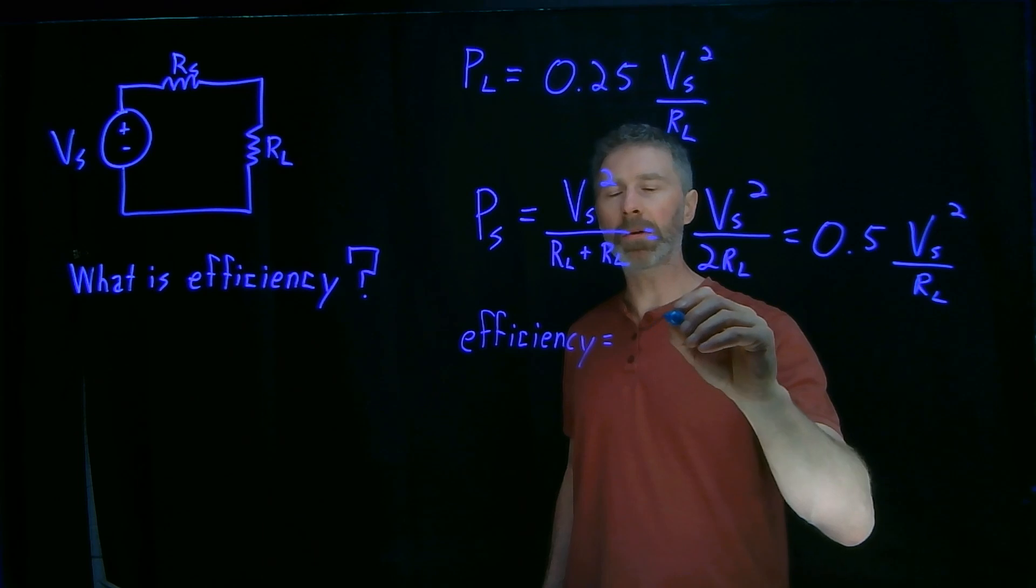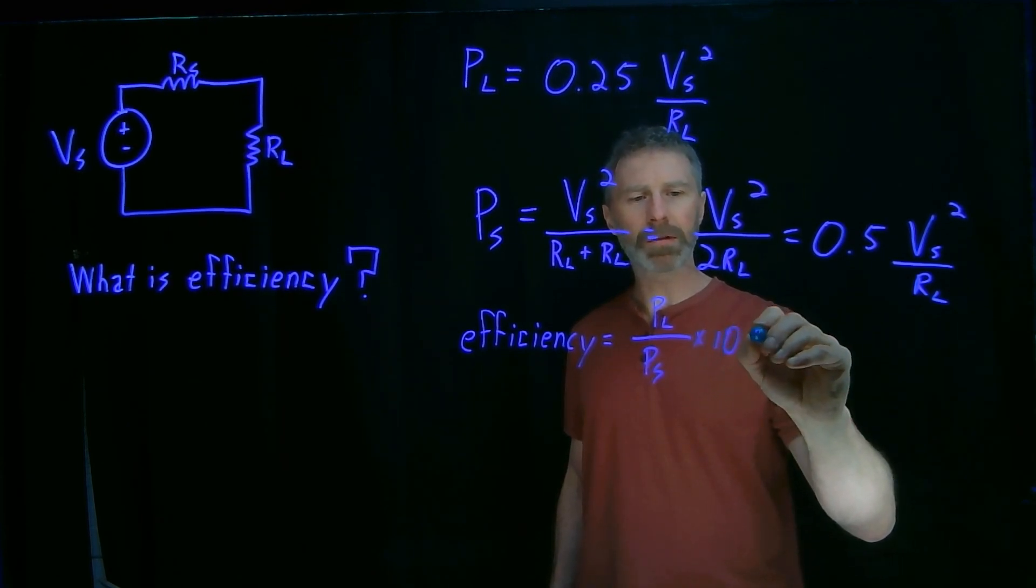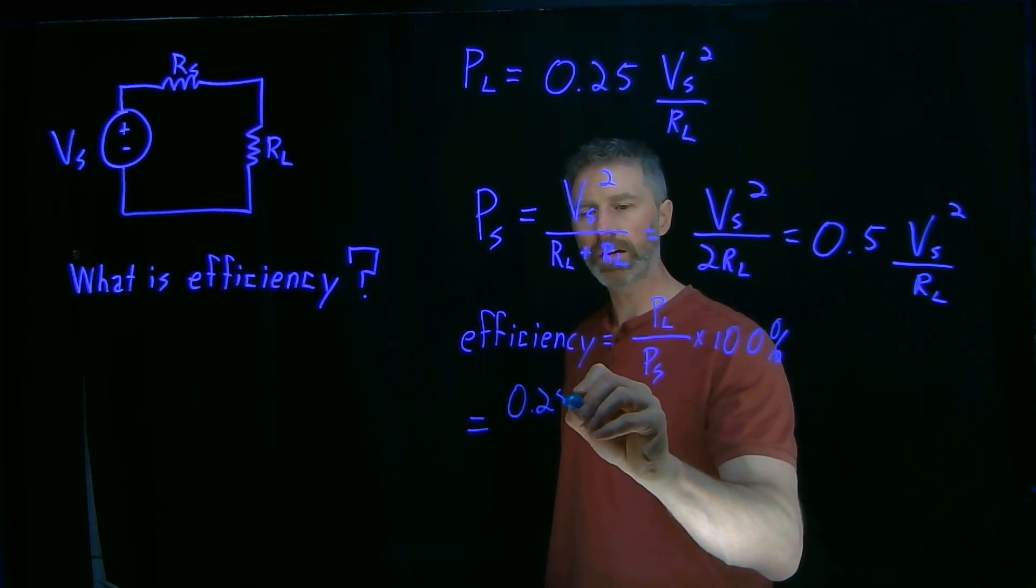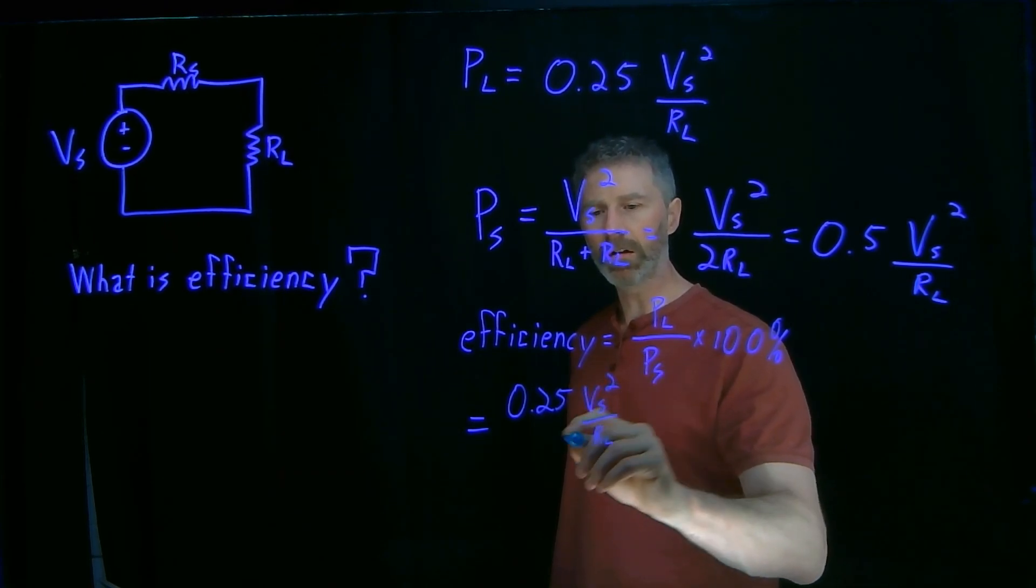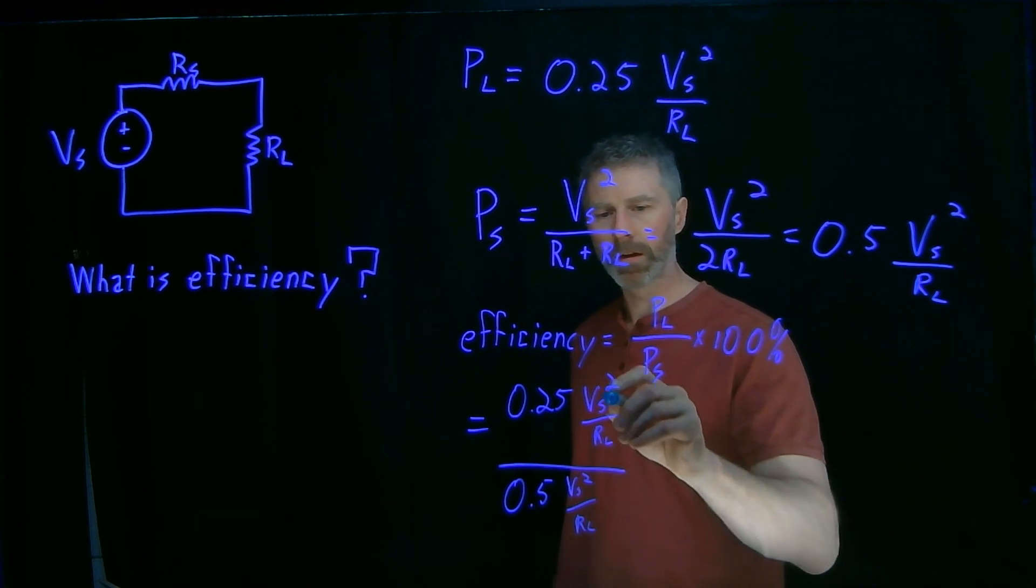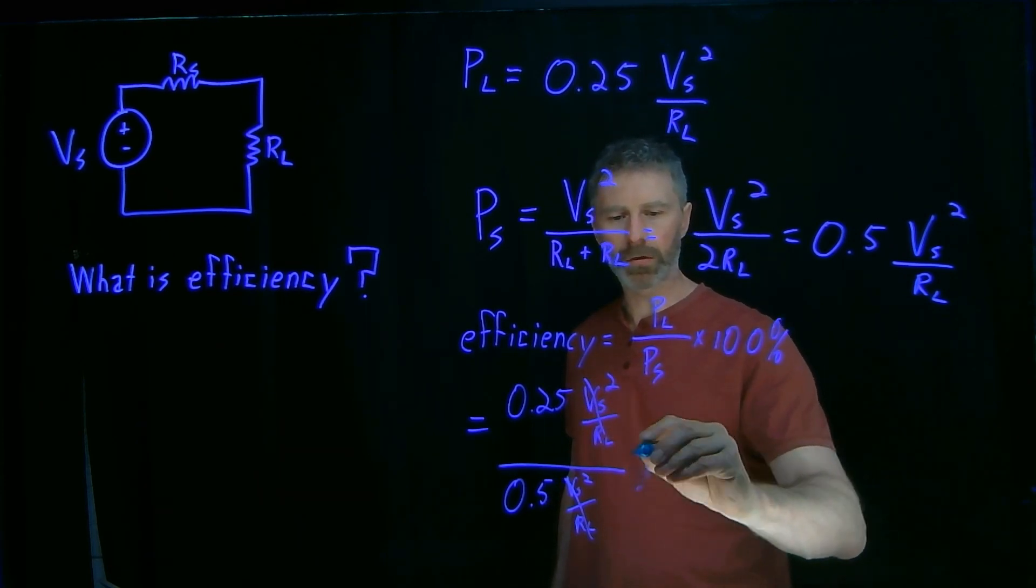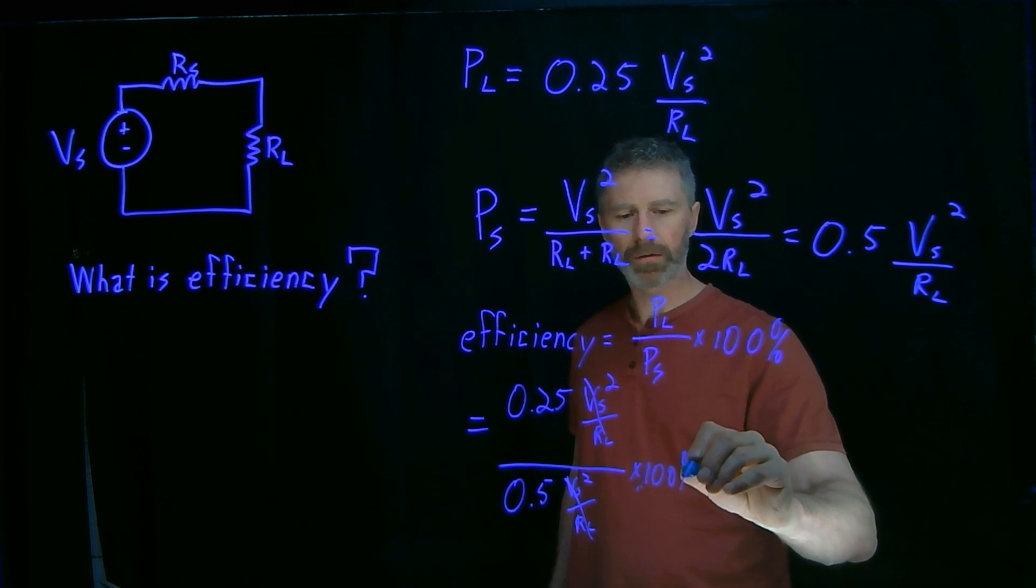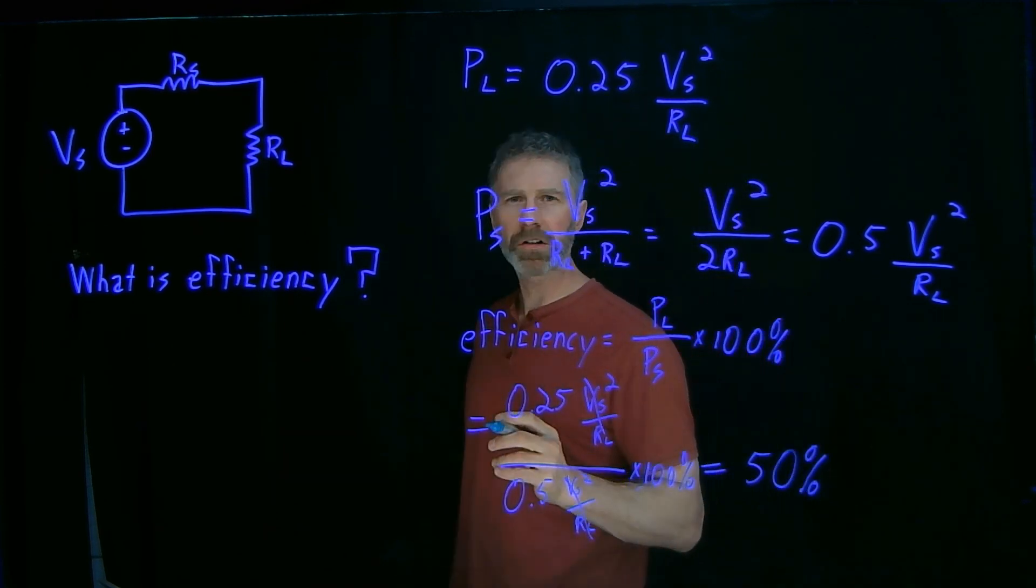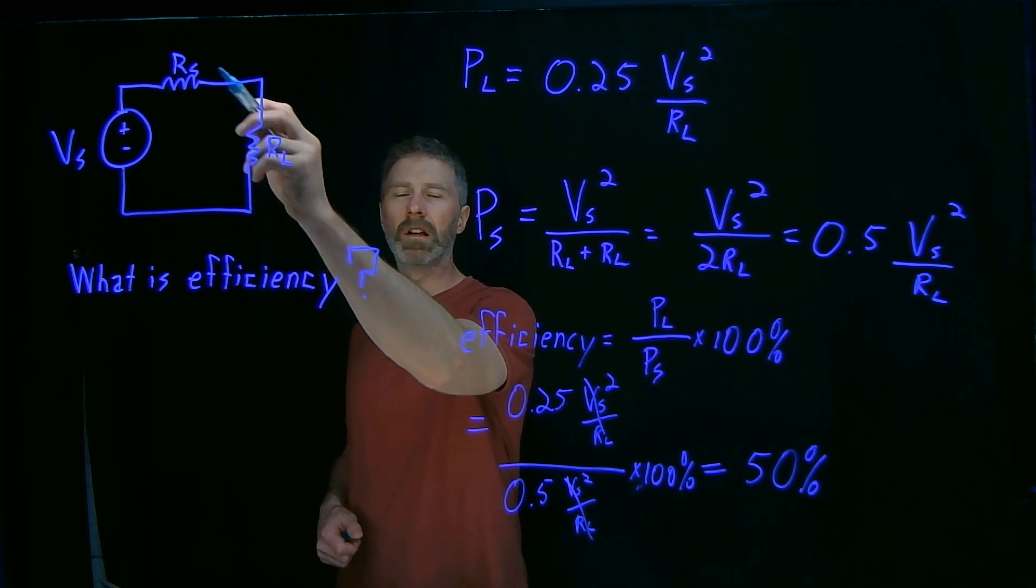And the efficiency of the system is the power out, so that's the power delivered to the load divided by the power delivered by the source times 100%. You get a value in percentage. And that will be 0.25 VS squared over RL divided by 0.5 VS squared over RL. These terms are common in the denominator and in the numerator. So we have 0.25 over 0.5, times 100% to get any percentage answer. And then that works out to 50%. So when we're at the maximum power point, when we're delivering maximum power to the load, half the power that we are creating from the source is getting wasted in the source resistance.